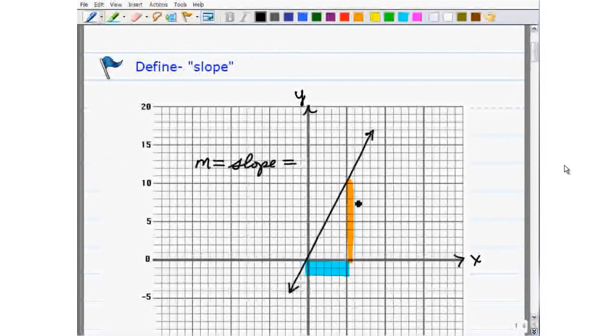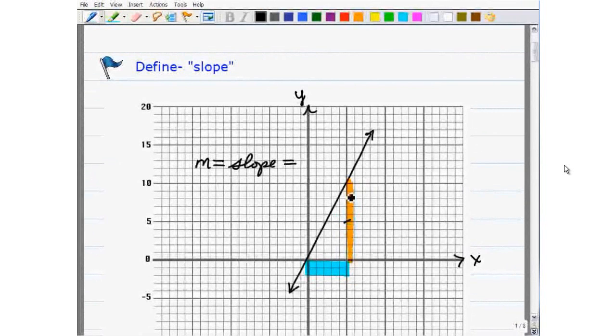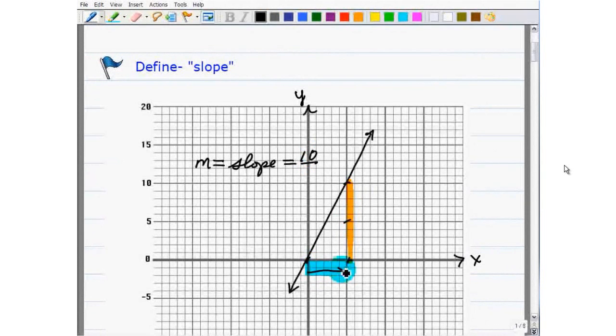So the slope here is its rise. And here, if you count carefully, it's rising 10 for every 5 it runs out. Remember, this is the run and this is the rise.